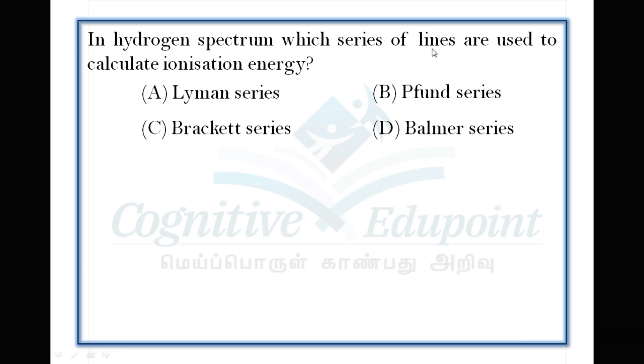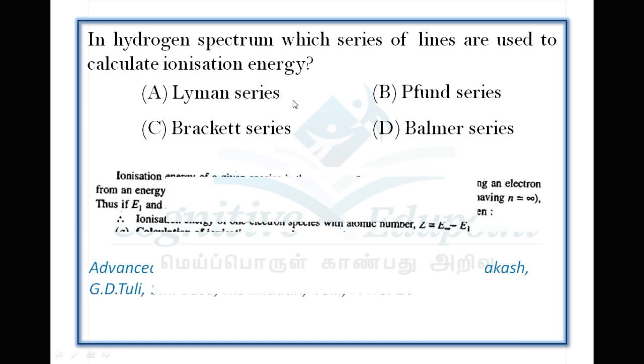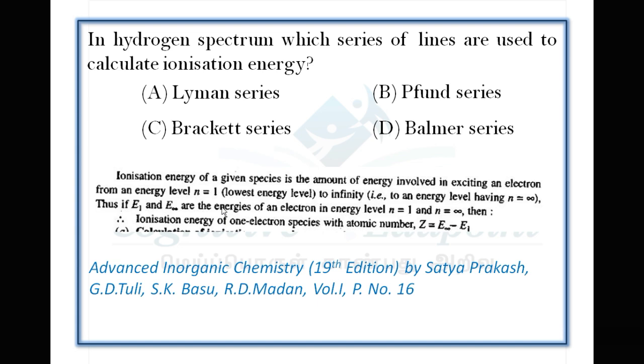Next question: In hydrogen spectrum, which series of lines are used to calculate ionization energy? To calculate ionization energy, you need the lowest energy level, which is n=1. Ionization energy brings the electron from the atom to infinity distance. The Lyman series is used to calculate the ionization energy. Correct answer is A.